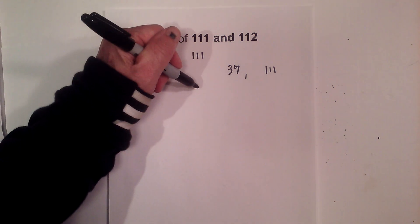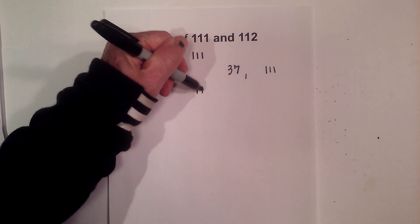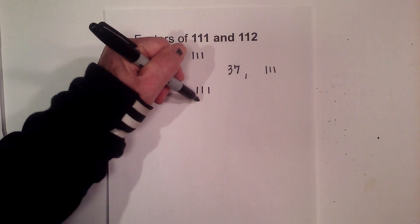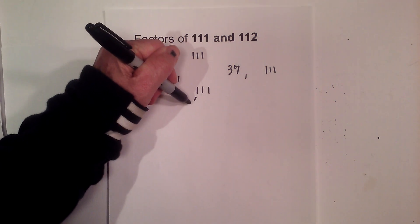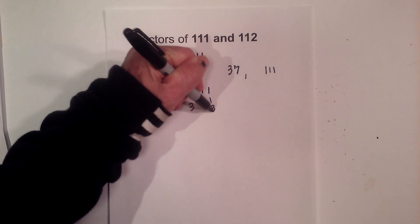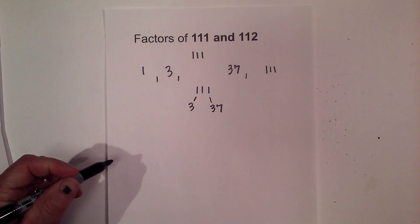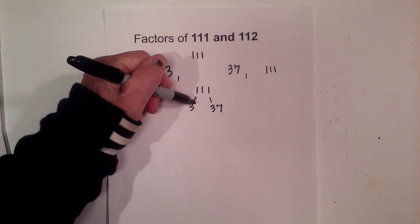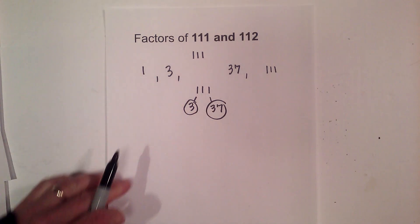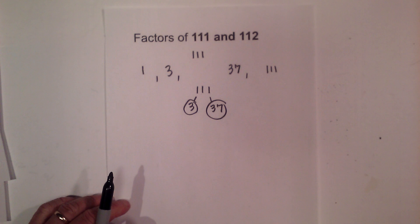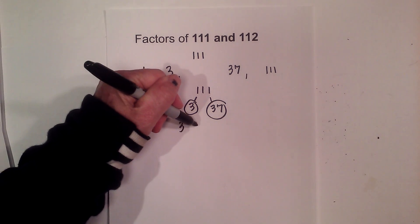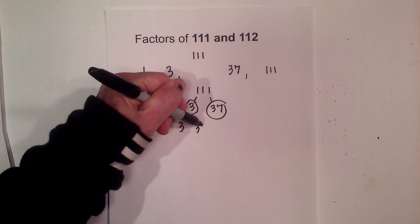If you'd like to complete a factor tree for 111, we'll begin with 3 times 37, and then we'll circle both of these because they are prime. So the prime factors of 111 are 3 and 37.